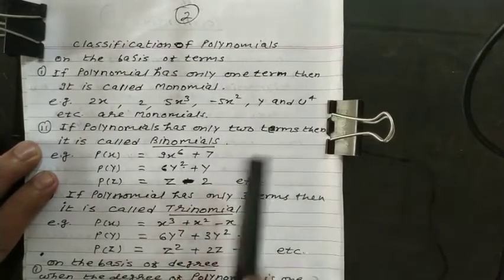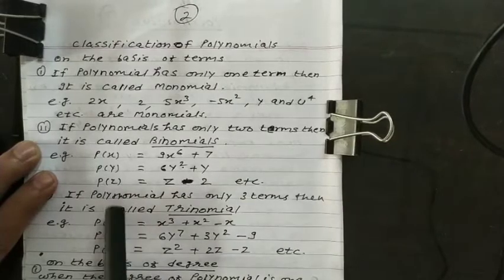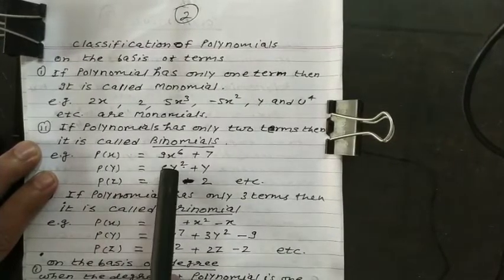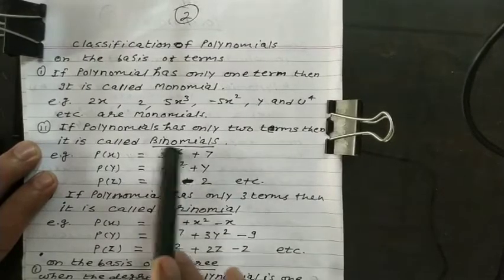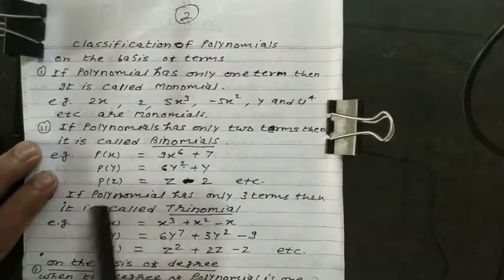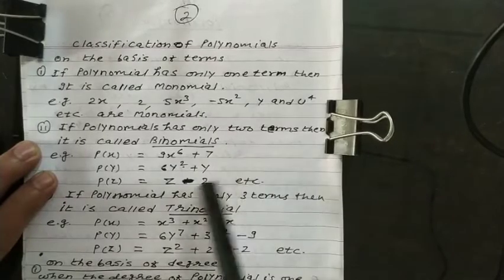If a polynomial has only two terms, it is called binomial. For example, p(x) = 9x⁶ + 7. Here, there are two terms. First is 9x⁶, another is 7.